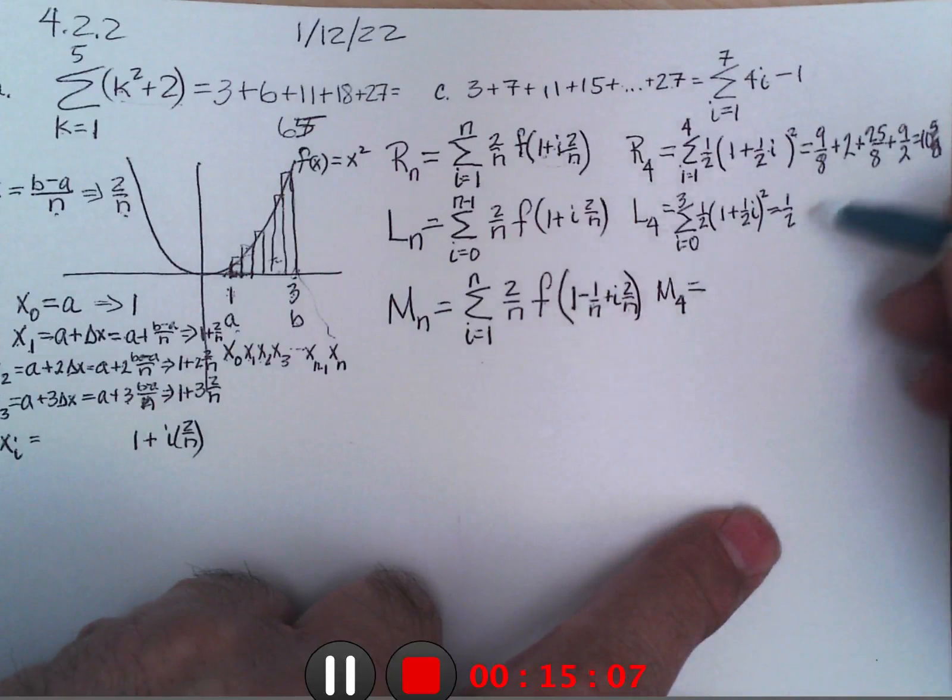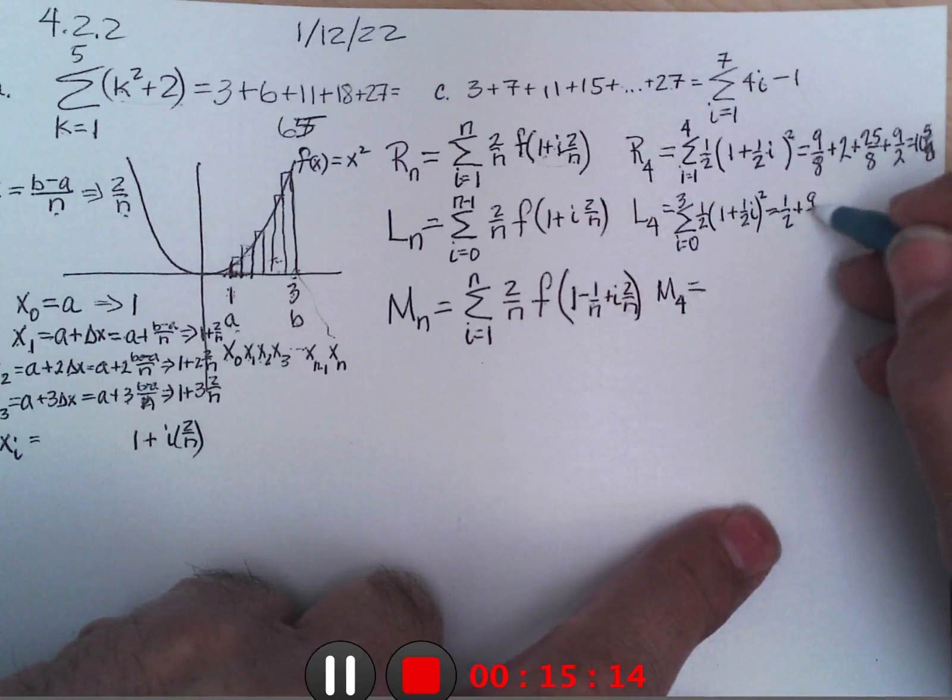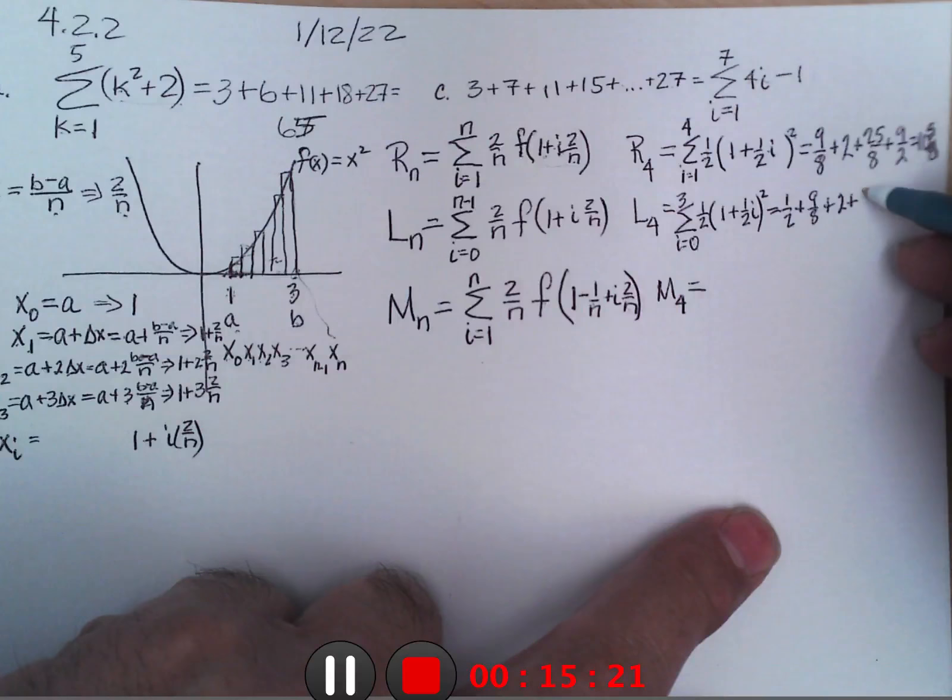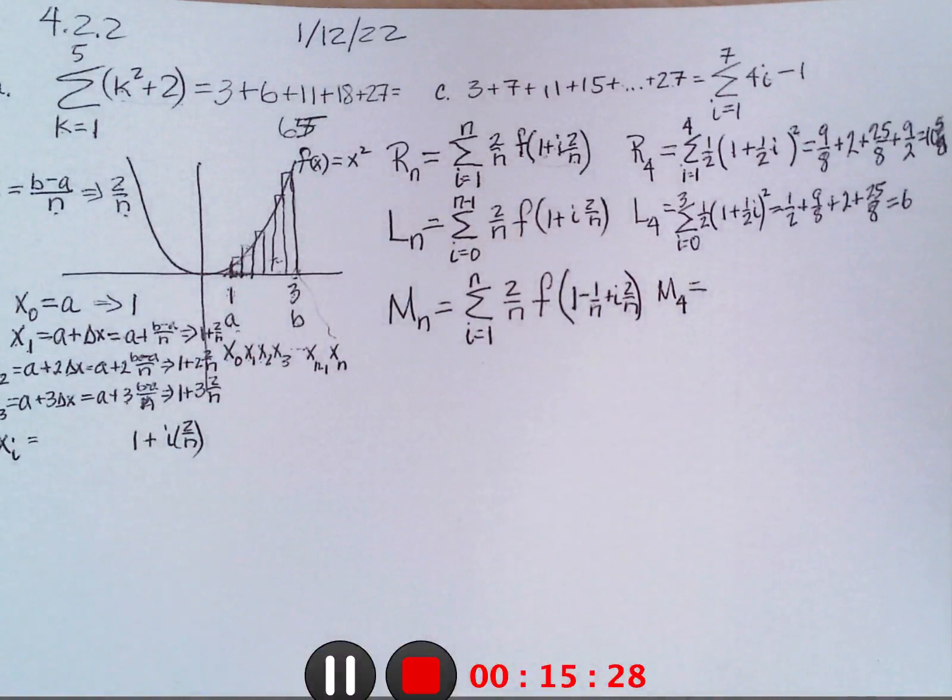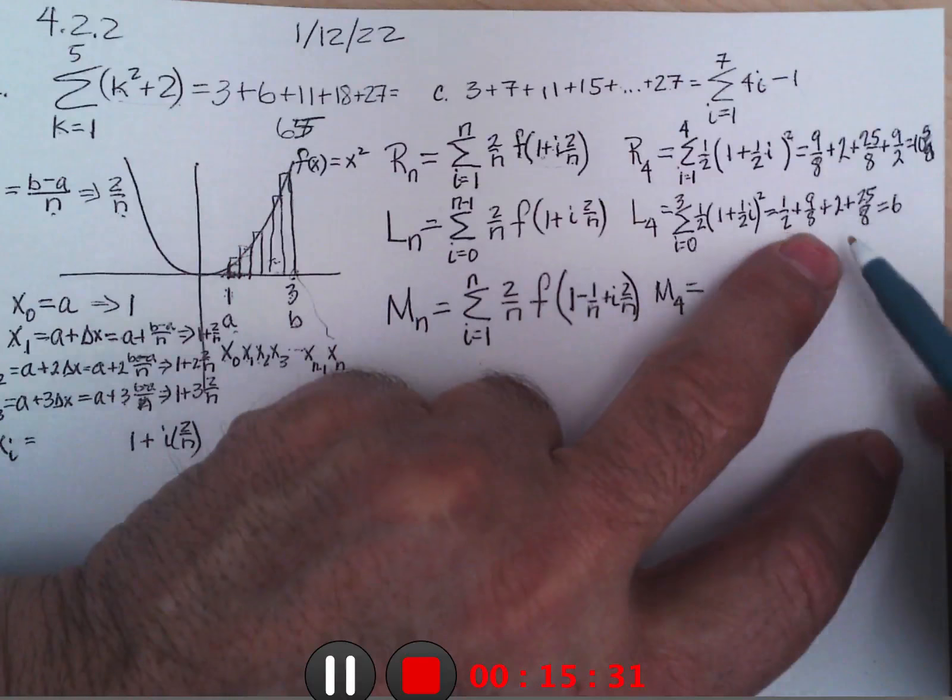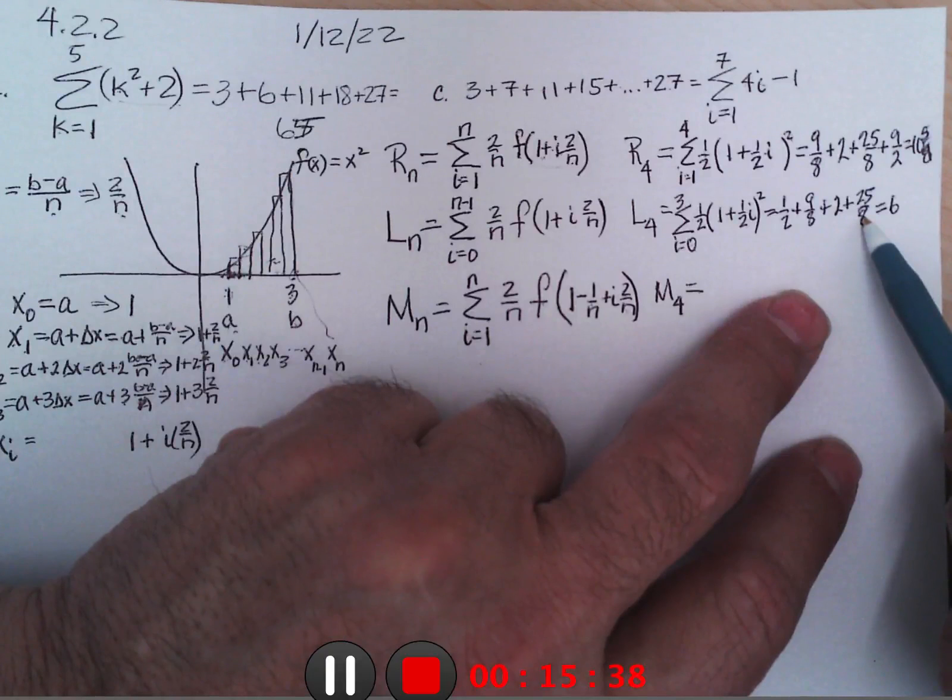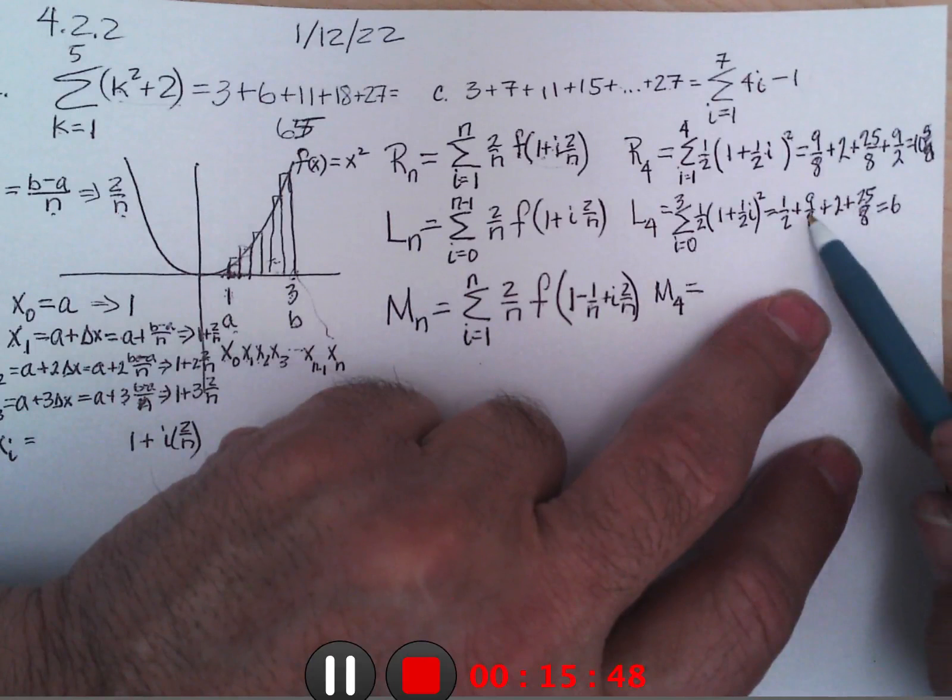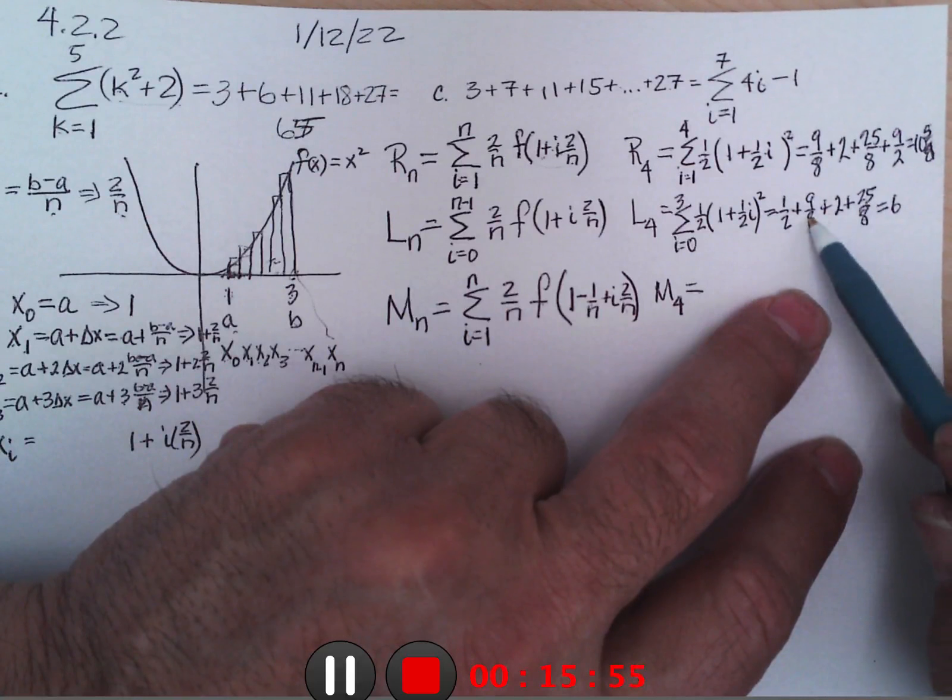And then we'd put in 1, and that would be the same as putting 1 into here, so we'd get 9 eighths. And we'd put in 2, we'd get 2, and then we'd put in 3, we'd get 25 eighths. And that turns out to be 6 and something, same something that that one is. Let me see if I can figure this out here: 1 and an eighth and 3 and an eighth. So 1 and 2, 3, 6, and 3, 8, and 1 eighth, and 1 eighth is 1 fourth plus a half is 3 fourths, 6 and 3 fourths. So this was 3 fourths also I think.